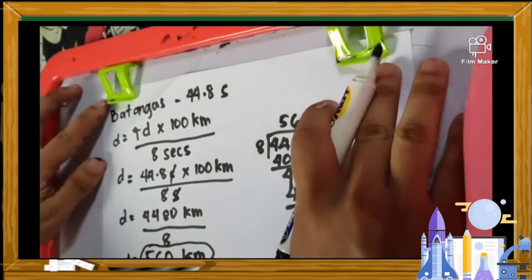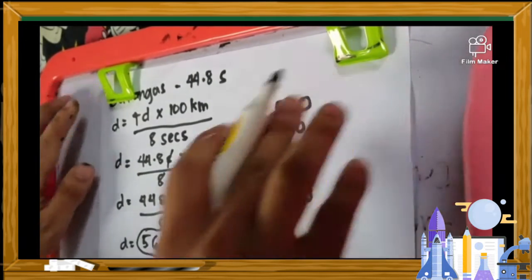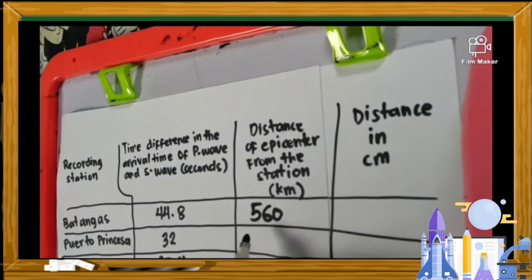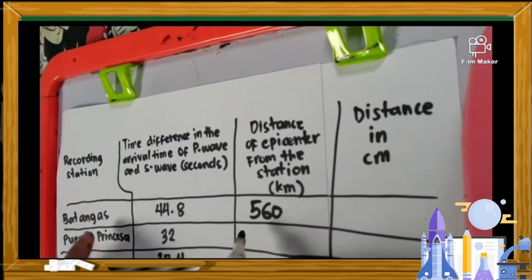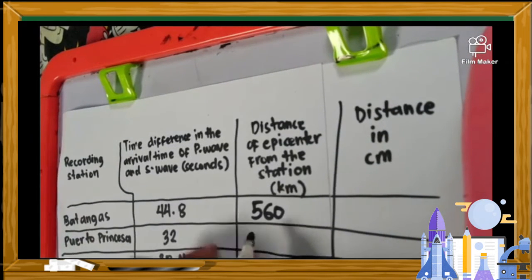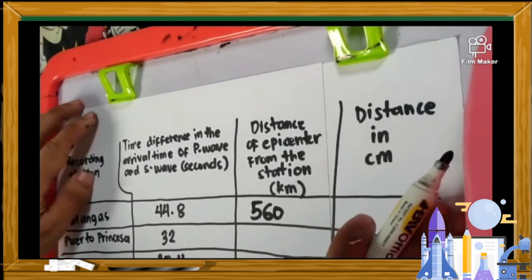We'll place that in the table. The answer for Batangas is 560 kilometers.